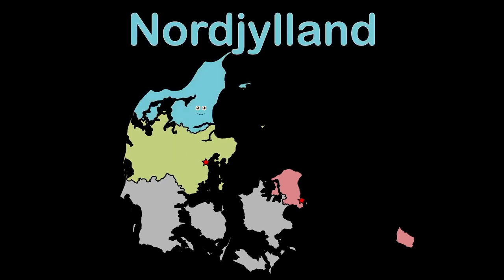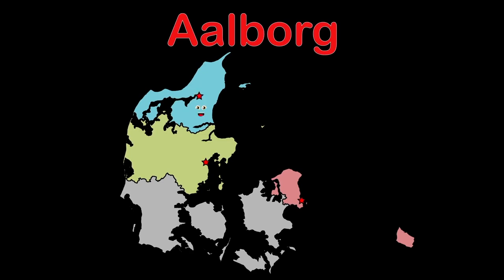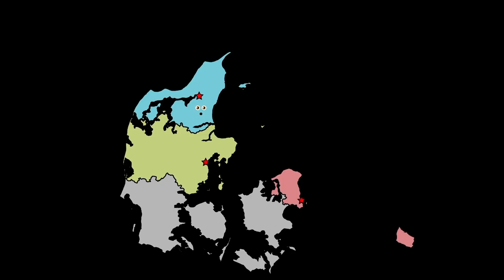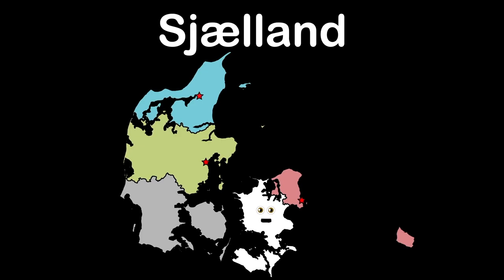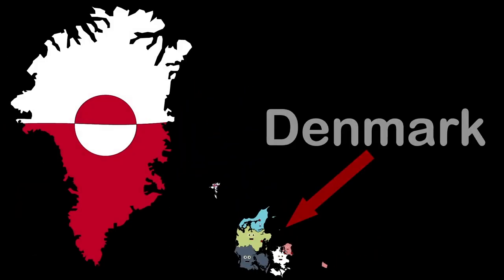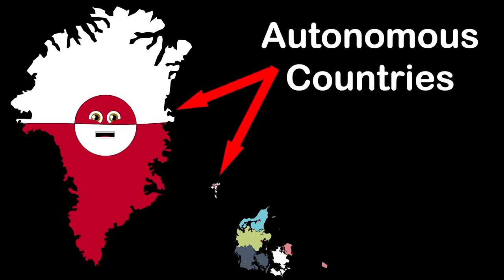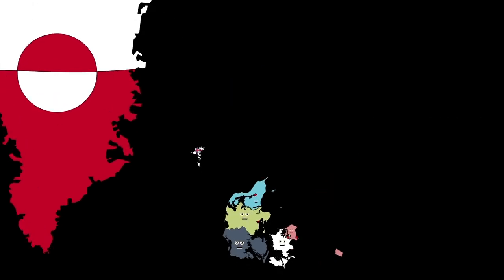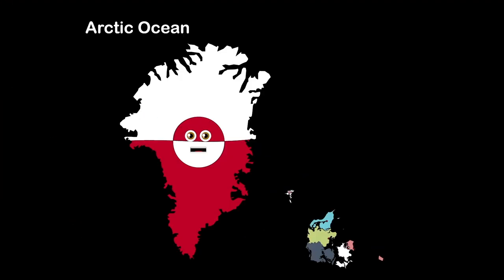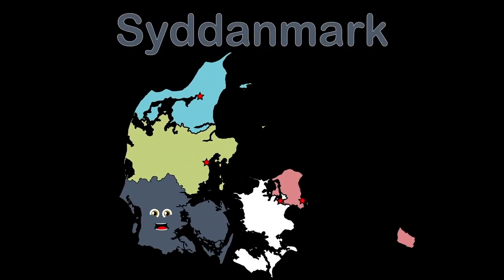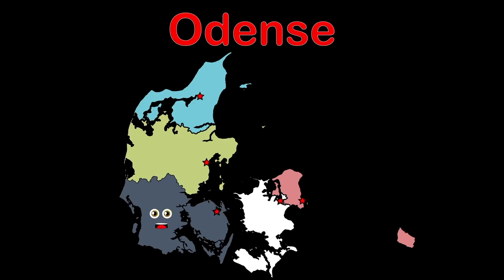Nordjylland region — my largest city is Aalborg. I am located in the northern tip of Denmark, touching Skagerrak. Sjælland region — my largest city is Helsingør. I'm the region of Syddanmark, bordering Germany. Odense is the name of my largest city. I am the southernmost point in my Scandinavian country, sandwiched between the North Sea and the Baltic Sea.